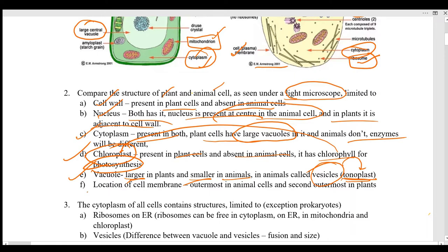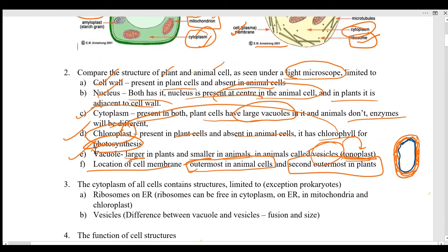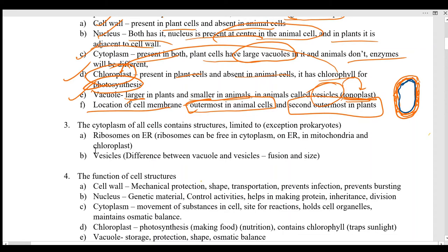The location of the cell membrane is very simple: it is the outermost layer in the case of the animal cell, and the second outermost in the case of the plant cell — because in the plant cell the cell wall is the outermost layer, and the cell membrane is found adjacent and attached just inside the cell wall.